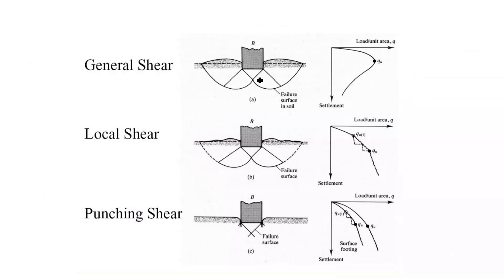In general shear failure, three distinct zones can be observed: Zone 1 is called the wedge zone, Zone 2 is called the radial shear zone, and Zone 3 is called Rankine's passive zone. In general shear failure, there is bulging of soil around the footing. On the load versus settlement curve, we get a peak representing ultimate bearing capacity, after which settlement increases without additional load.